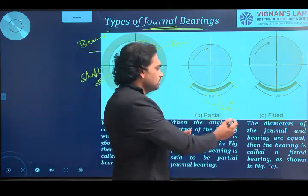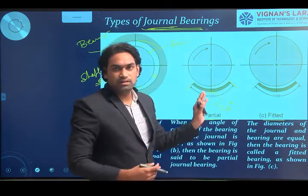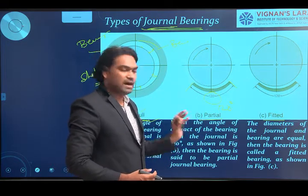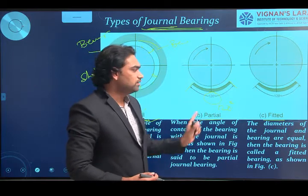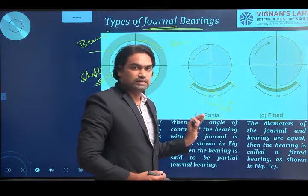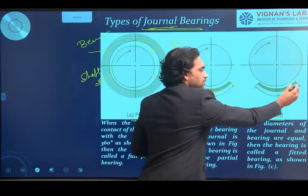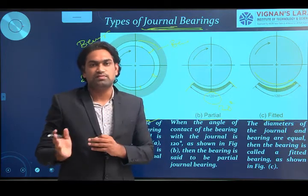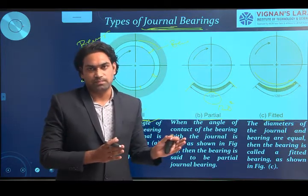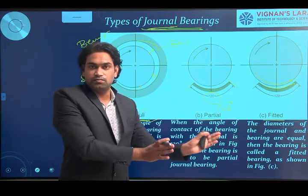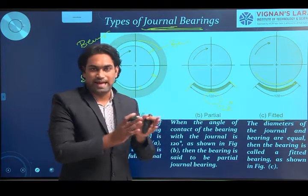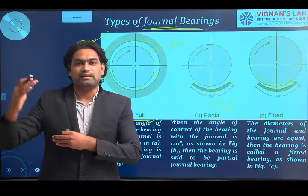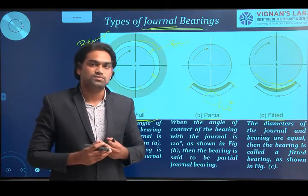Coming to the fitted journal bearing: the angle of contact between the bearing surface and the shaft surface is 120 degrees — the same as the partial bearing. But the difference between partial and fitted journal bearing is that in a fitted journal bearing, the diameters of the bearing surface and the journal are the same. In a partial journal bearing, the diameter of the bearing is slightly larger than the diameter of the journal, providing clearance for lubrication.